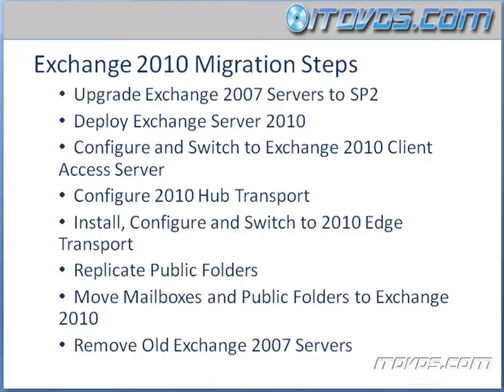Our migration steps for migrating from Exchange 2007 to Exchange 2010 are going to be to first upgrade our Exchange 2007 servers to Service Pack 2. Once we get that done, we're going to deploy our Exchange Server 2010 servers. Depending on how many servers we're going to have and what roles we're going to install on what servers, that affects what servers we're going to deploy first.